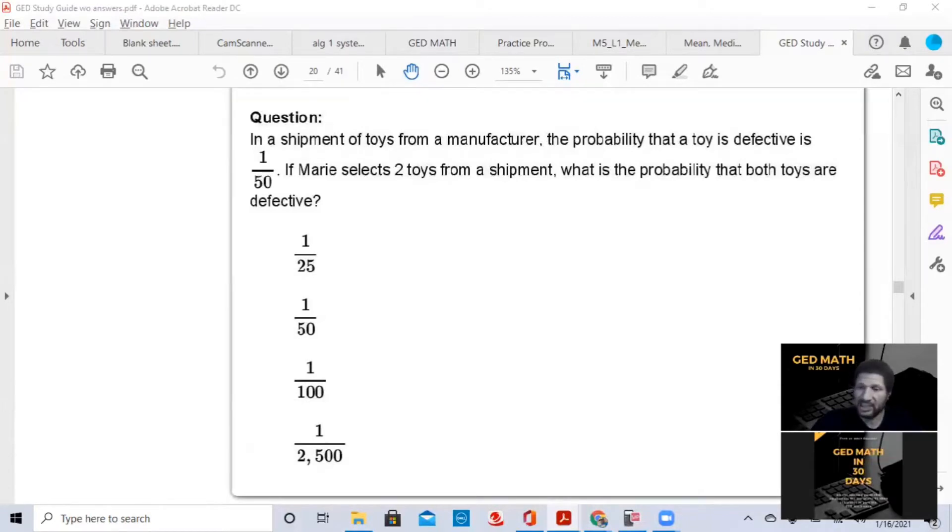This example comes from the GED study guide for mathematics. It's a very good guide. Has over 40 practice problems. It says, in the shipment of toys from a manufacturer, the probability that a toy is defective is 1 over 50. What part over whole? Part over whole. What part is defective? 1. What's the whole? 50.